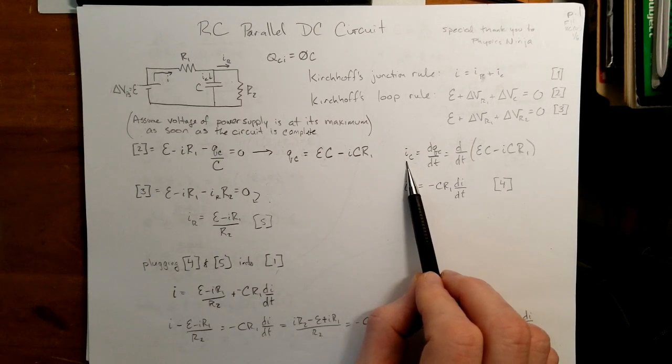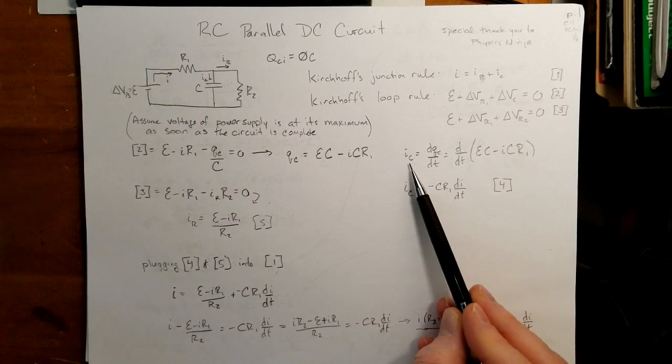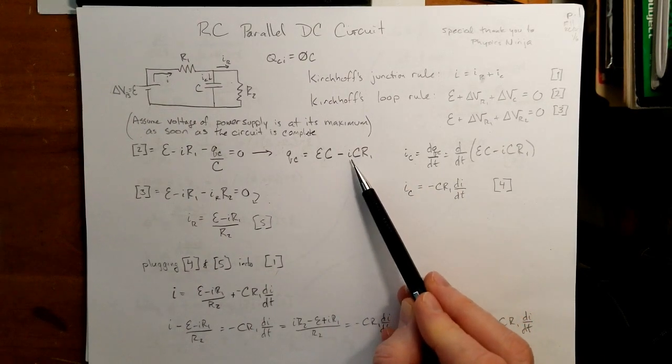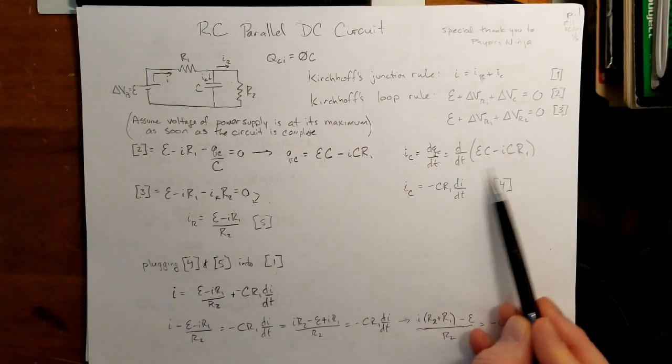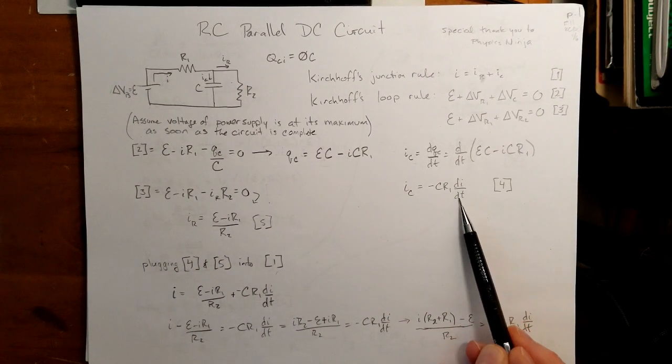Finding the current, IC, because ultimately I've got this other equation here, that IC is just the derivative of this with respect to time, and so I end up with my I sub C is equal to negative CR1 di dt.